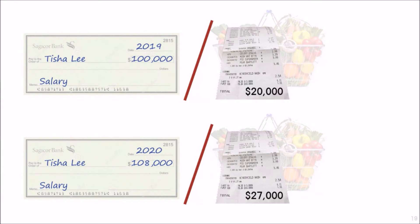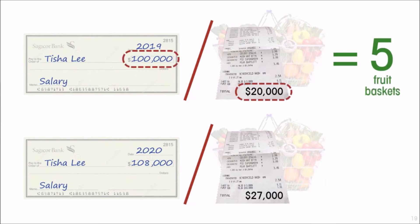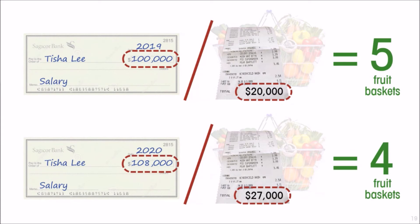Because of general price increases, the following year that basket costs twenty-seven thousand dollars. We can express your salary in each year not in nominal terms but in terms of baskets of groceries. In 2019, your hundred-thousand-dollar salary can buy five baskets; in 2020, after the nominal increase, your salary can only buy four baskets. So while your nominal salary has gone up, the real equivalent — your real salary — has gone down.